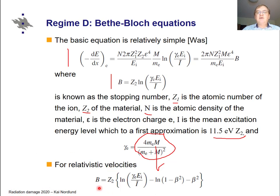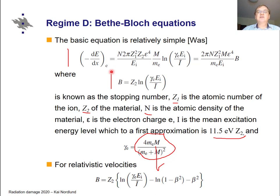If the ion velocity is very high, as it often is in this regime, one should use the relativistic version of the B factor, where beta is the velocity divided by c as usual in relativistic theory. The quantities here are simple and easy to understand, so this analytical equation can be easily calculated and gives the electronic stopping power in the high energy regime.